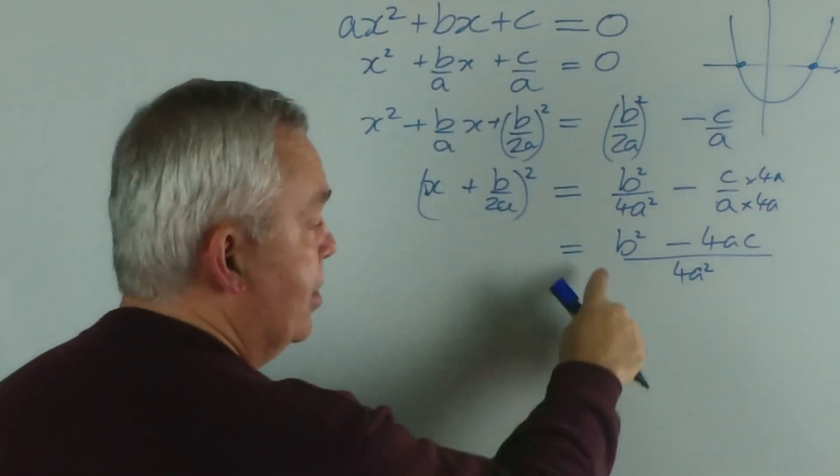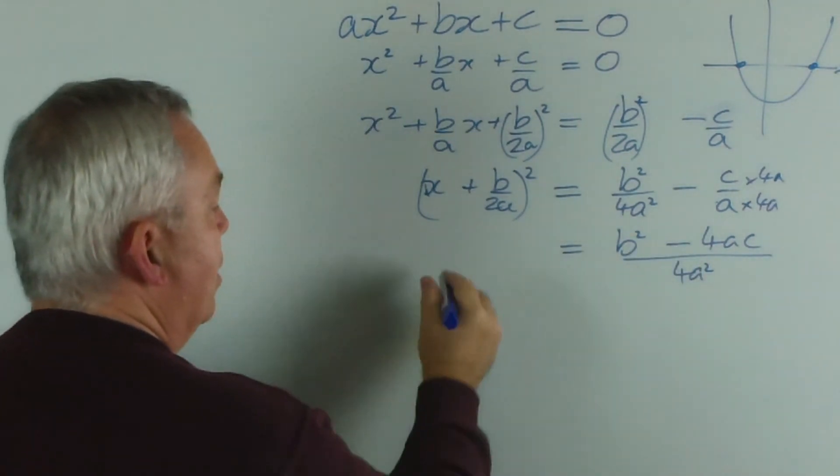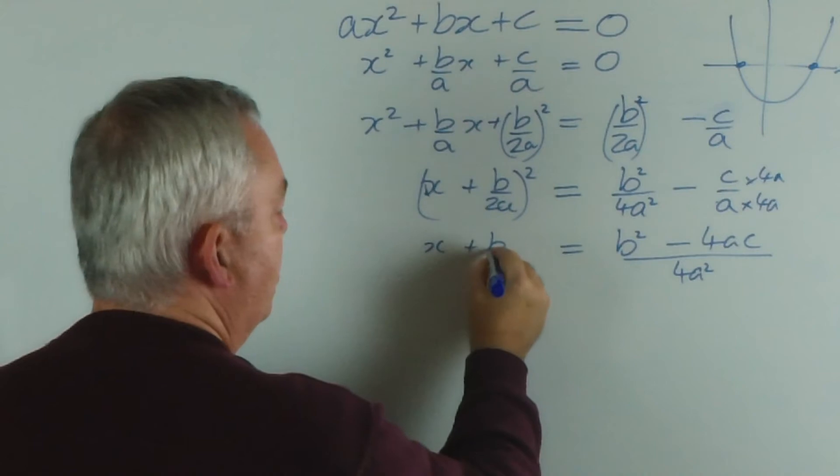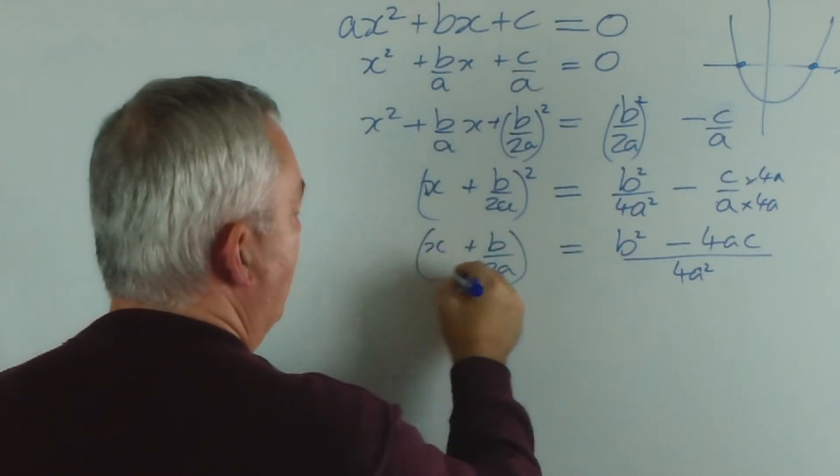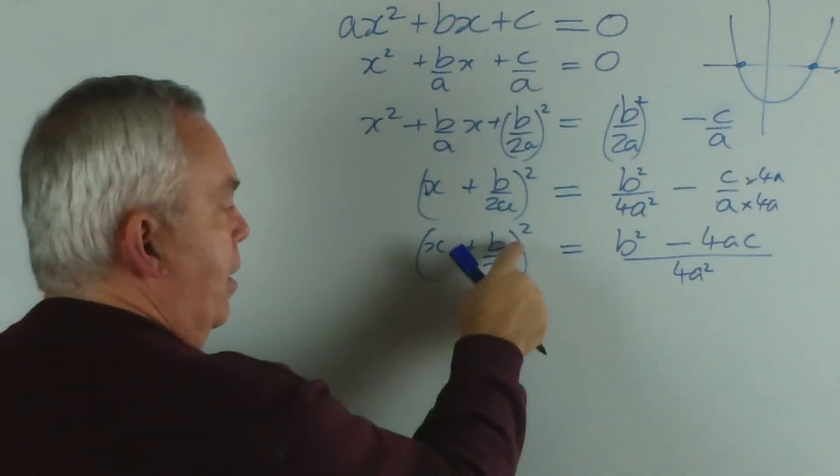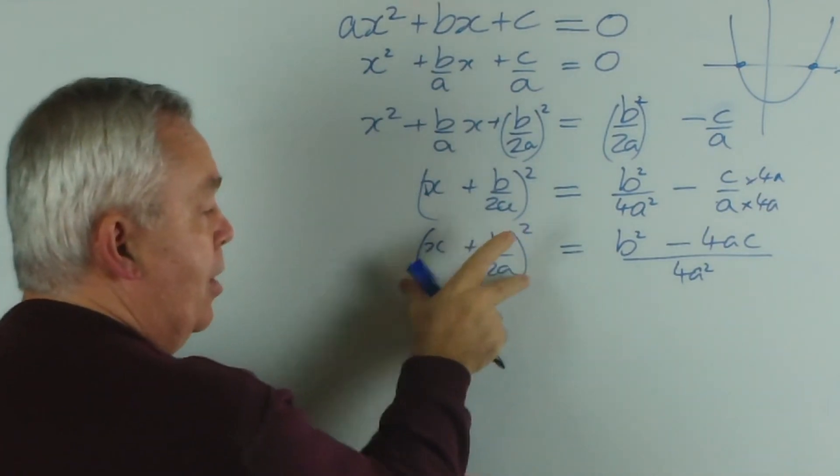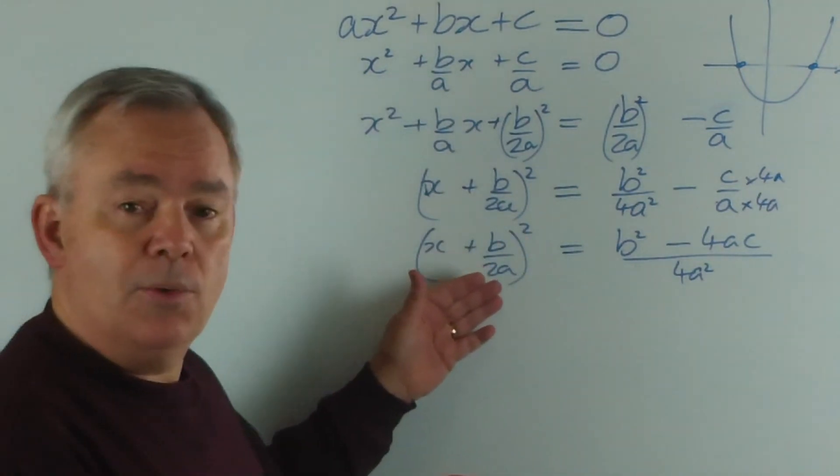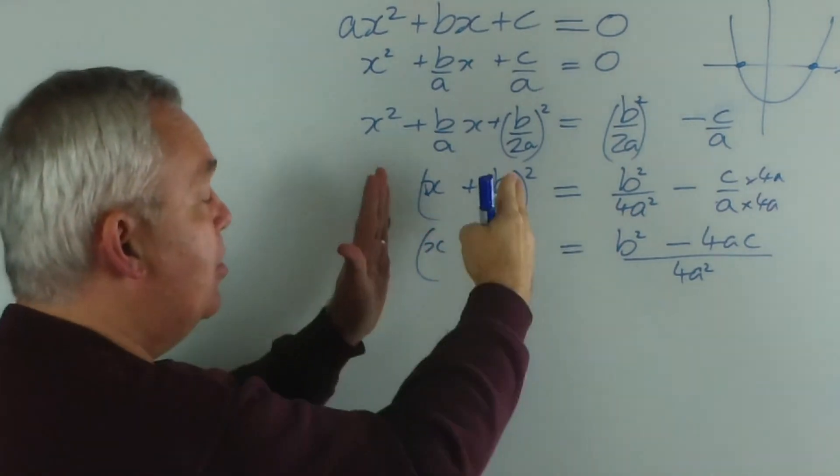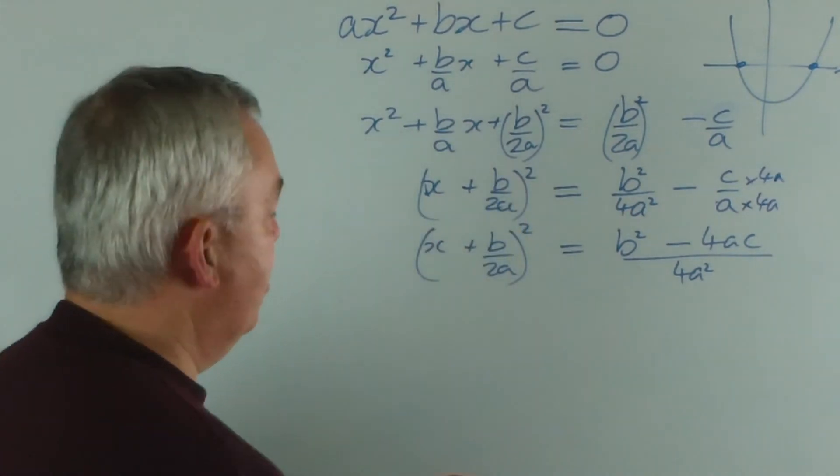Now you can see the quadratic formula starting to take shape. I'll just copy this again. Now we take the square root of both sides. Strictly speaking, the square root of x plus b on 2a all-squared is the absolute value of x plus b on 2a.